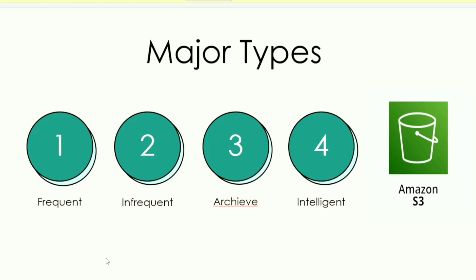Archive is a category for data that is used less often — perhaps once every 6 months or 1 year. If we use data that infrequently, we can choose the Archive class and migrate the object at that time.